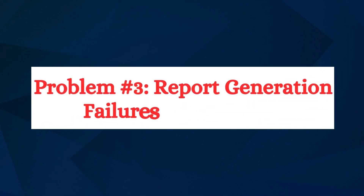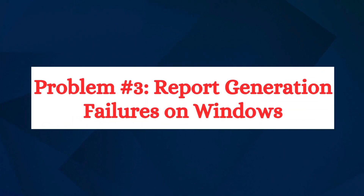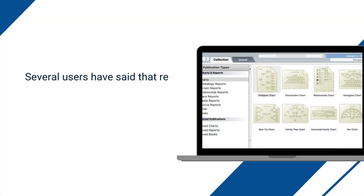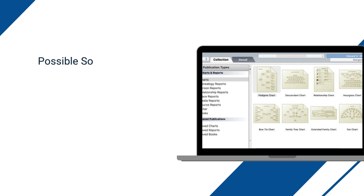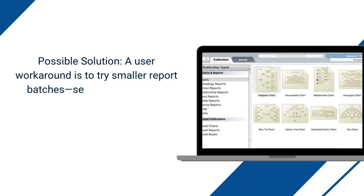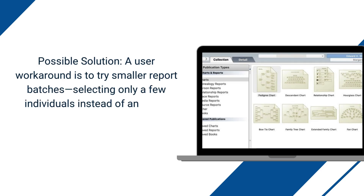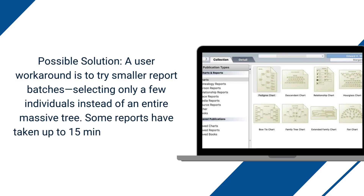Problem number three: report generation failures on Windows. Several users have said that report generation simply fails to run on Windows, even when it works fine on a Mac. Possible solution: a user workaround is to try smaller report batches, selecting only a few individuals instead of an entire massive tree. Some reports have taken up to 15 minutes to generate, so patience is also key. Again, this may or may not work depending on the size of your database.